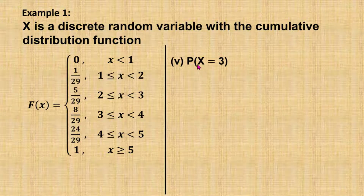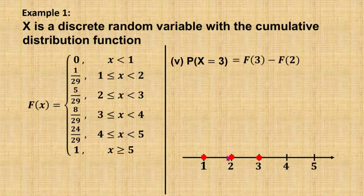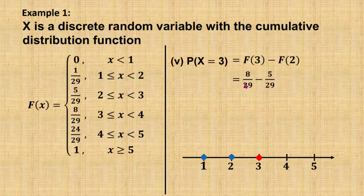Next, find the probability when x equals 3. In the cumulative distribution, P(X = 3) equals the cumulative probability up to 3 minus the cumulative probability before it, which is F(3) minus F(2). So F(3) equals 8 over 29 and F(2) equals 5 over 29. When we subtract, the answer is 3 over 29.